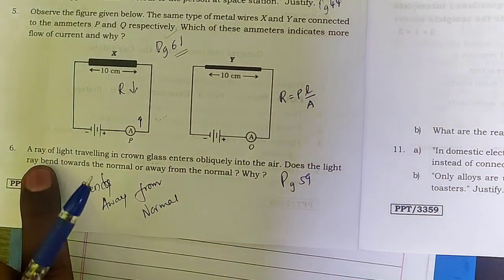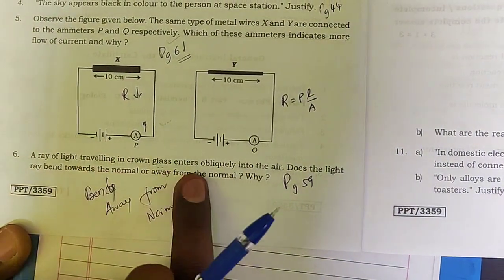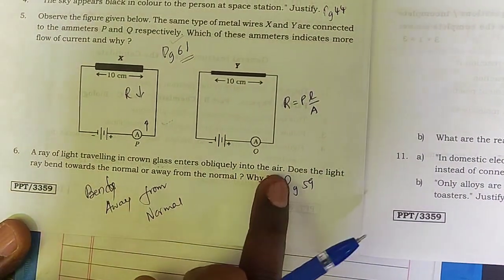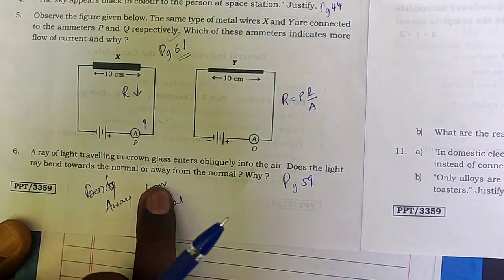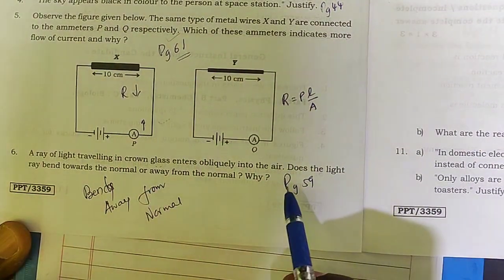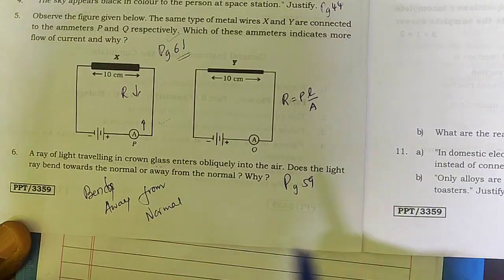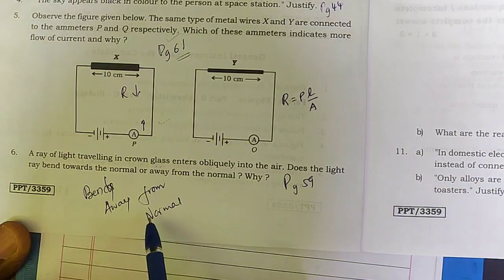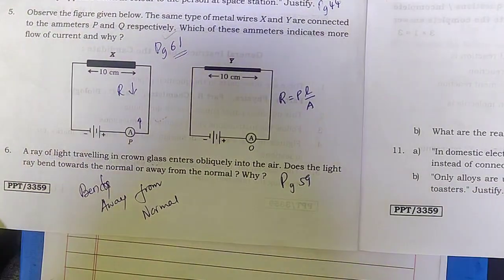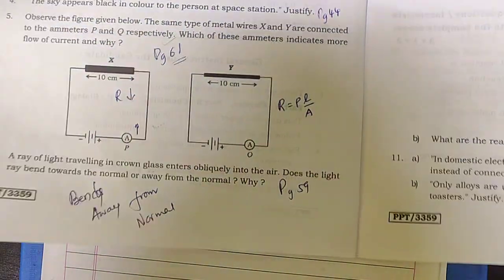A ray of light traveling in crown glass enters obliquely into another medium — this means light is going from a denser medium to a rarer medium. It bends away from the normal because of the difference in refractive index.